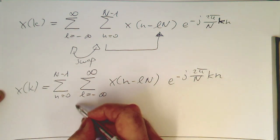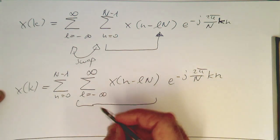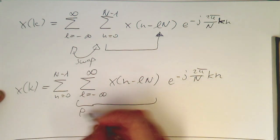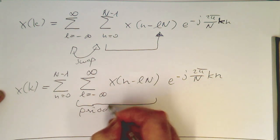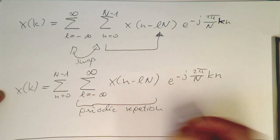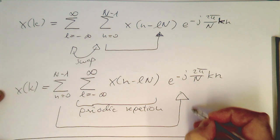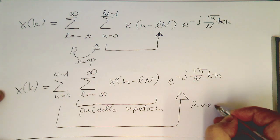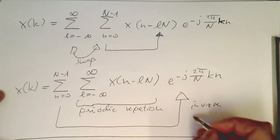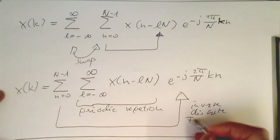So now we see something here. So this looks like a periodic repetition. And this one here looks like our proper inverse discrete Fourier transform.